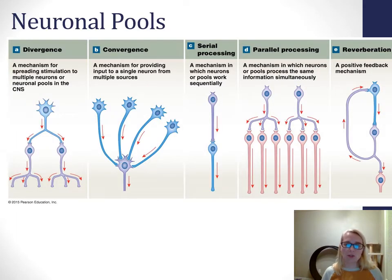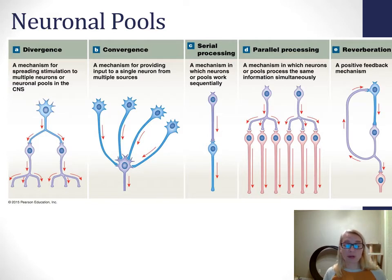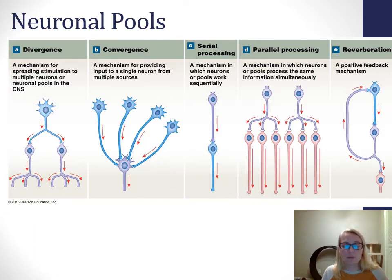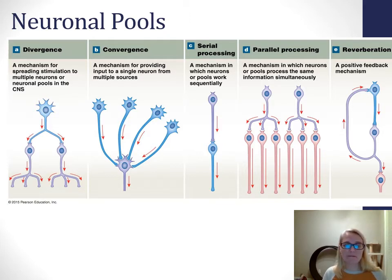Before we get to reflexes, we need to take a look at what's called neuronal pools. Chapter 12 talked about how action potentials are generated at the dendrites and cell bodies with graded potentials. Those are summed together to either bring the initial segment to threshold or not, to trigger an action potential which perpetuates the signal onto the next cell — whether it's another neuron, a gland, or a muscle. We have five different kinds of neuronal pools and we'll go through those with examples.